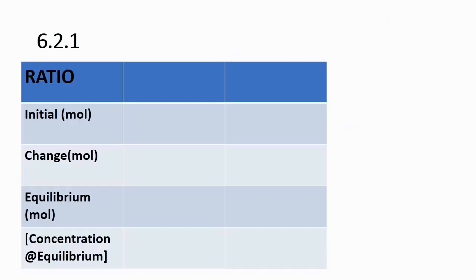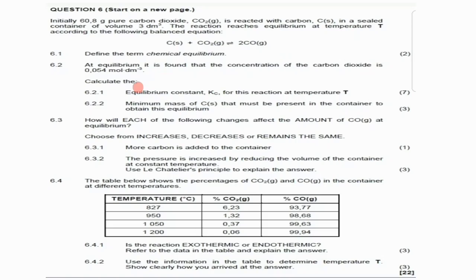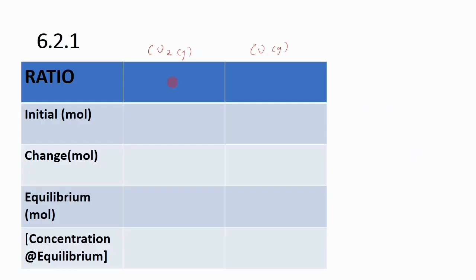To calculate, we use a RICE diagram: Ratio, Initial number of moles, Change in number of moles, and Equilibrium number of moles, plus concentration at equilibrium. We set up the CO₂ block and the CO block. According to the balanced equation, the ratio of CO₂ to CO is 1 : 2.